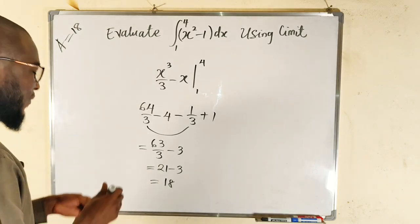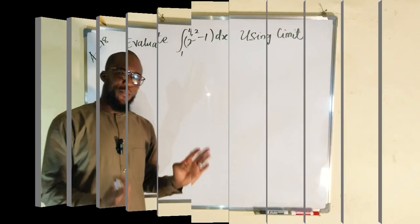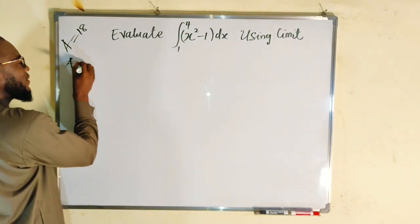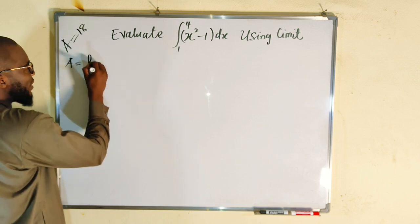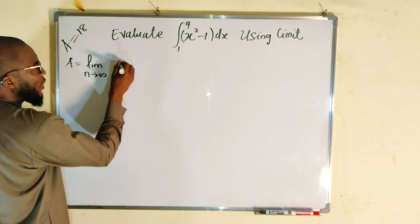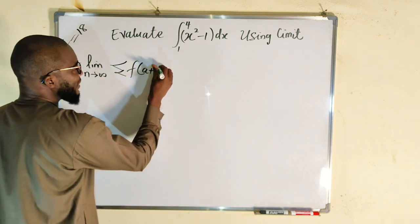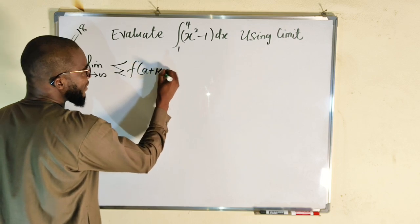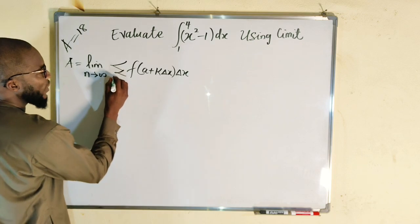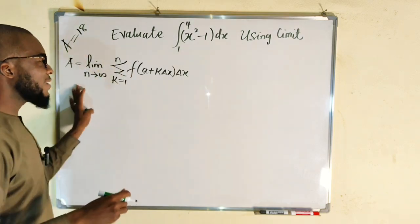Now let us apply the definition and see whether we get 18 or not. From definition, area is equal to the limit as n approaches infinity of the summation of f of (a plus k times delta x) multiplied by delta x, for k beginning at 1 and stopping at n. This is our formula.